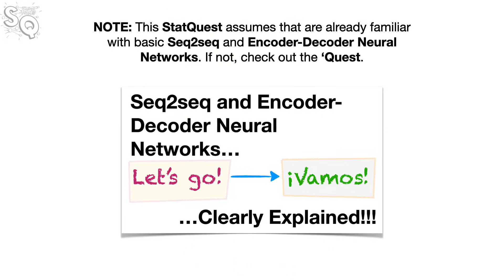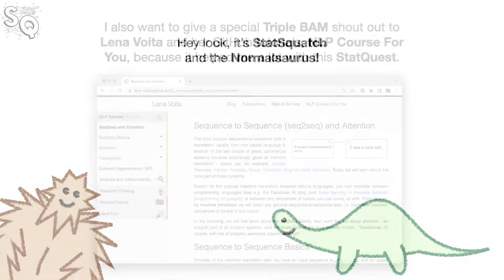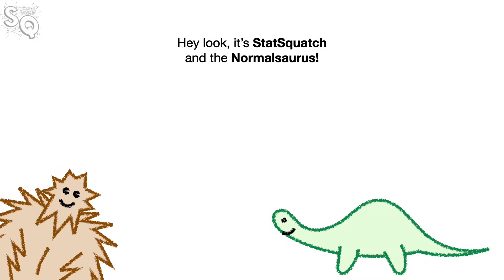Note, this StatQuest assumes that you are already familiar with basic sequence-to-sequence and encoder-decoder neural networks. If not, check out the quest. I also want to give a special triple BAM shout-out to Lena Vojta and her GitHub Tutorials NLP course for you because it helped me a lot with this StatQuest. Hey look, it's StatSquatch and the Normalsaurus.